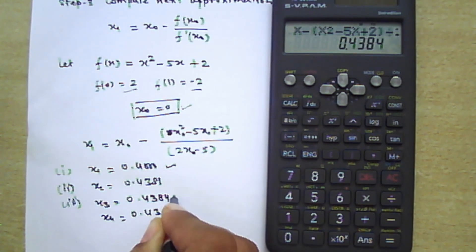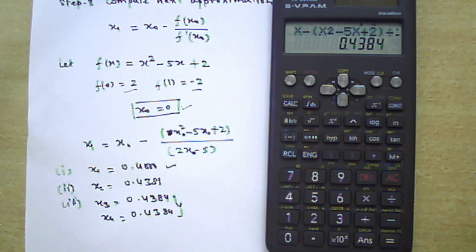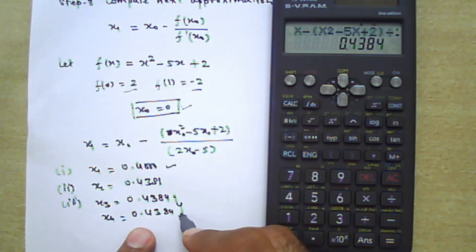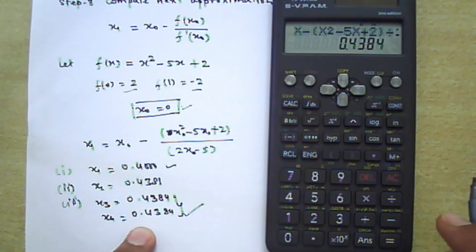You can see that the last two approximations, x₃ and x₄, are equal up to four digits after the decimal point. Therefore, 0.4384 is the approximate root of the function x² - 5x + 2.